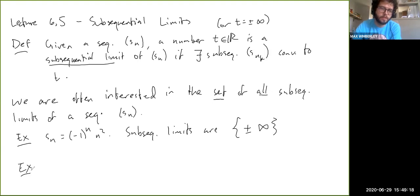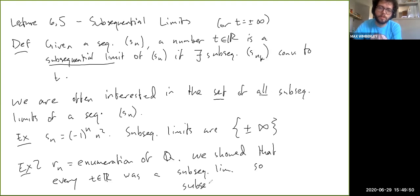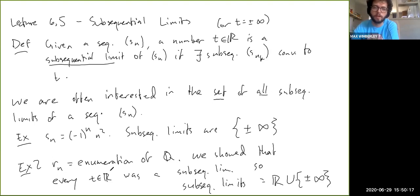Lastly, consider the sequence rn, which was the enumeration of the rational numbers. We showed that every T is a subsequential limit. So the subsequential limits are all of ℝ plus plus and minus infinity. Clearly you can get plus or minus infinity by taking 1, 2, 3, 4, 5 etc., or negative 1, negative 2, negative 3, and so on. Since ℚ is unbounded, rn has to be unbounded, so it has subsequences approaching plus or minus infinity.